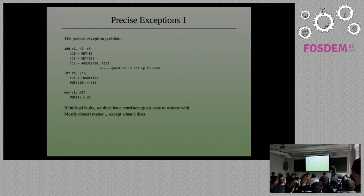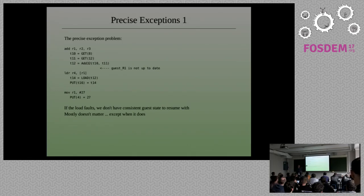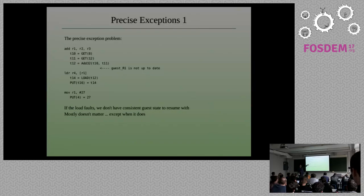I wanted to talk about a different problem which is also important: the precise exceptions problem. Returning to our running example — originally there was a put IR statement writing the value of R1 back into the guest state. We removed it because we see R1 is written further down, so the put is redundant. But if this load faults, we're not going to be able to complete simulating that instruction. We'll have to leave the simulator and deliver a signal to the simulated application, and we do not have an up-to-date value of R1.